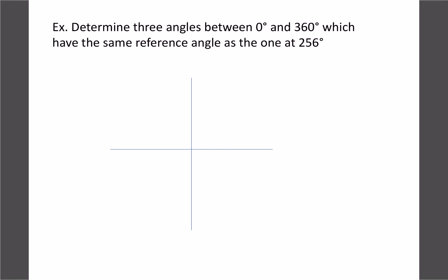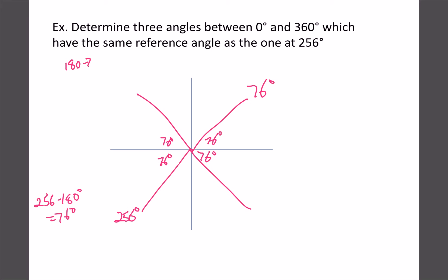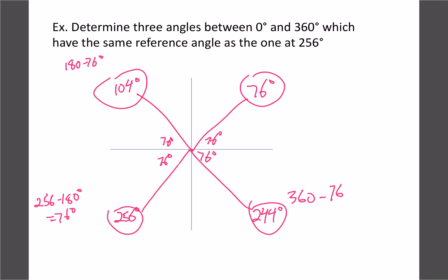For the last example, we have an angle of 256 degrees. So our reference angle is 256 minus 180, giving us 76 degrees. Now placing 76 in all four quadrants: quadrant one is 76; quadrant two is 180 minus 76, which is 104; and quadrant four is 360 minus 76, which gives us 284. So those are the four angles that all share the exact same reference angle of 76.